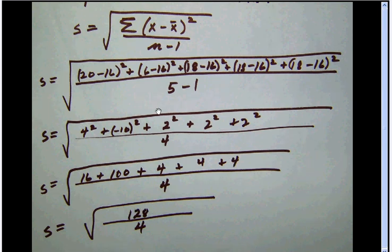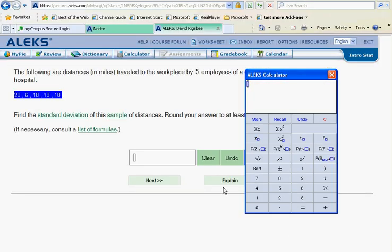Notice up here that 5 minus 1 is 4 on the bottom. So we're now going to have the square root of 128 divided by 4. An easy way to do this now is just go back to your Alex calculator and simply hit the square root key, 128 divided by 4, and then just let the calculator do the work here. The answer that we get is 5.6568 and then a string of decimals.